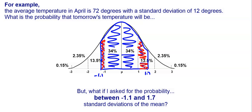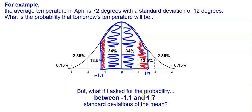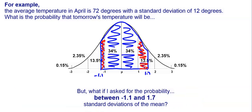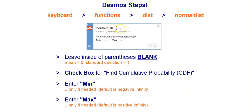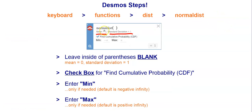This is where Desmos and other calculators can come in handy — we can have the calculator find the area under the curve. We go to keyboard, functions, DIST for distributions, and then normal distribution. Because we're talking about standard deviations, we leave the parentheses blank, meaning the mean is 0 and the standard deviation is 1. We check the box to find the CDF, enter the minimum of negative 1.1 and maximum of 1.7. Desmos shades the region and gives us the area: 0.82 rounded, so there's an 82% chance.